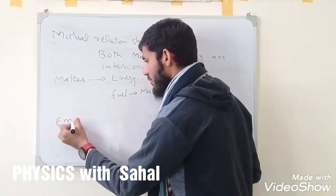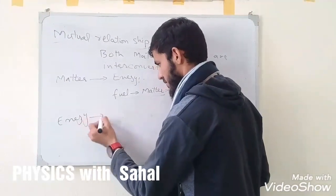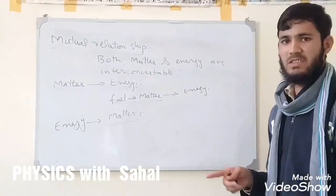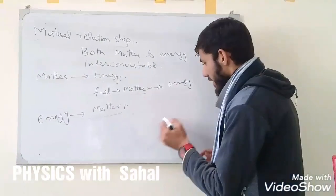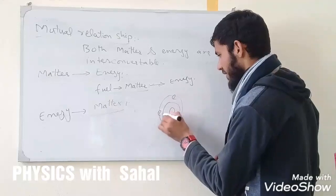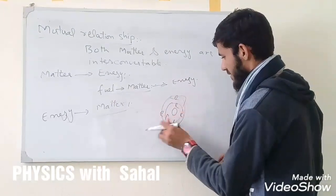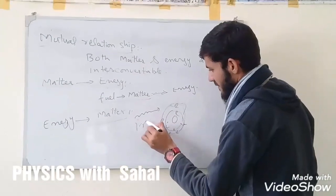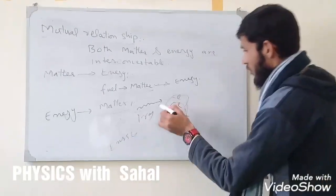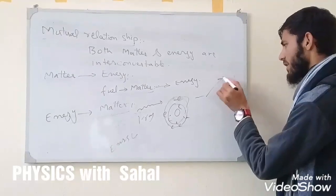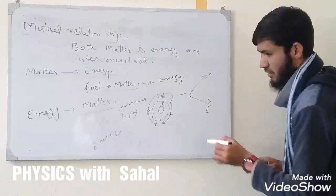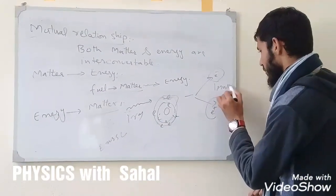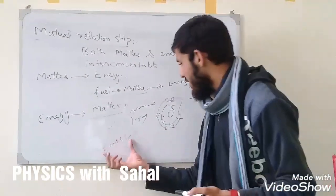Now how is energy converted into matter? This is a little bit complicated — it's called the pair production process. We have an atom with electrons, and we have gamma rays. Gamma rays are energy. When the gamma ray passes through this atom, it converts into an electron and a positron — so this is energy converting into matter.